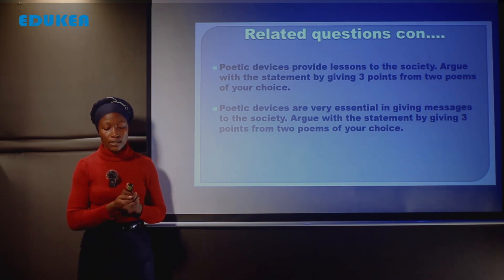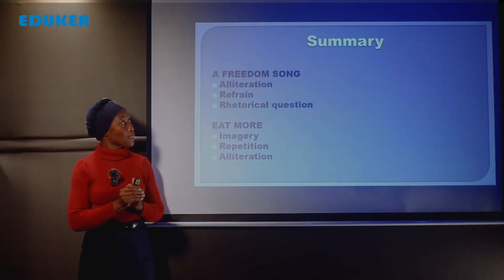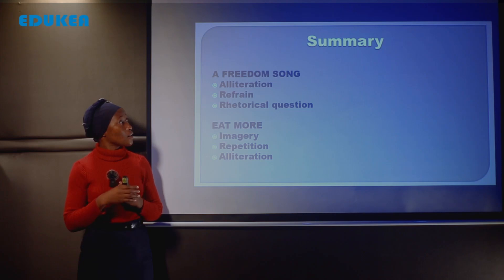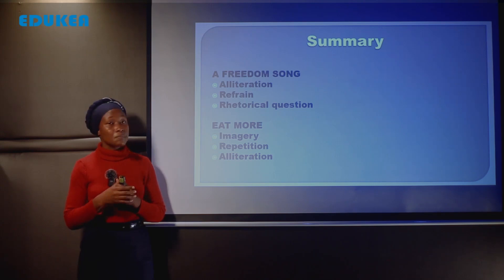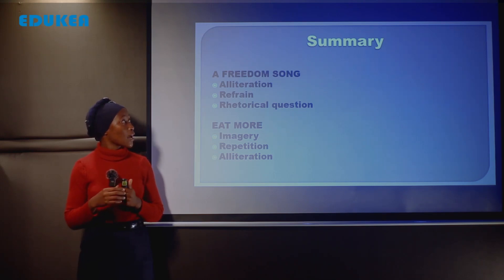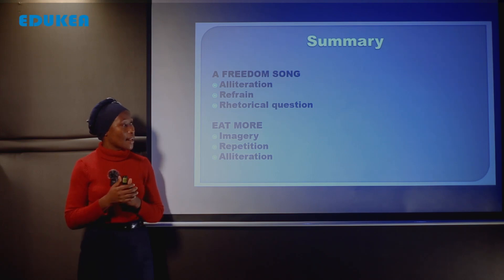In summary, we discussed poetic devices in two poems — Freedom Song and Eat More — getting three points per each poem. In Freedom Song: alliteration, refrain, and rhetorical question. In Eat More: imagery, repetition, and alliteration.